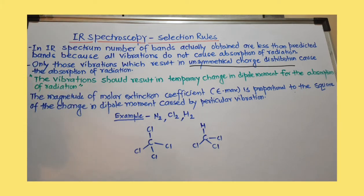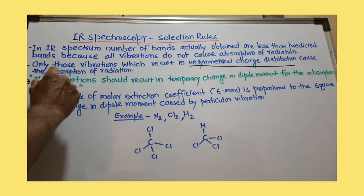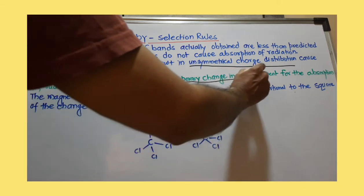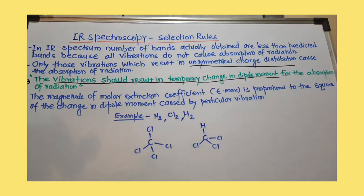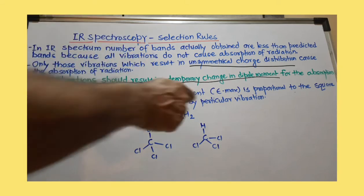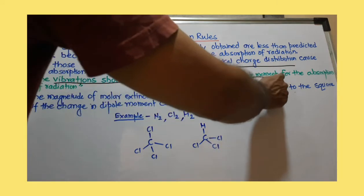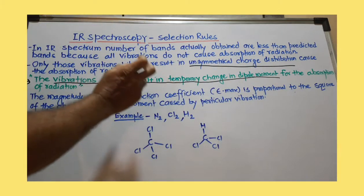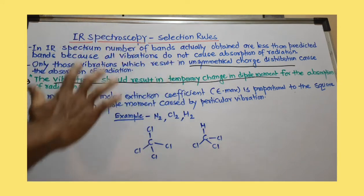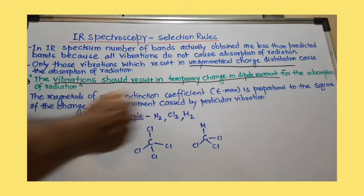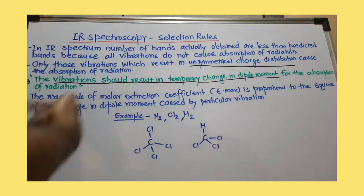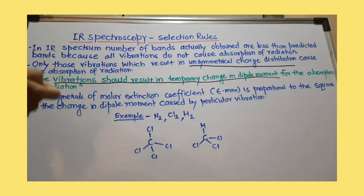So what is the selection rule? A vibration should result in a temporary change in dipole moment. It is not necessary that the molecule originally has some dipole moment, but due to vibration there must be a change in dipole moment. Dipole moment is only because of charge distribution. If the molecule has positive and negative charge, it has a certain dipole moment. And if originally the molecule is not having a dipole moment, but because of vibration there is some dipole moment, then that molecule absorbs IR radiation. This is the selection rule.